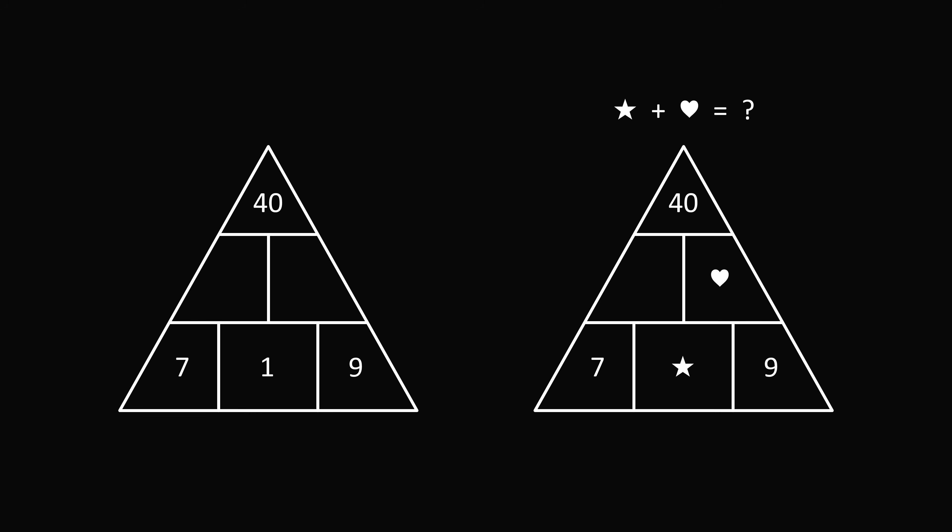We can now solve for the rest of the number pyramid. So 7 plus 1 is the number that has to be immediately above it, and 7 plus 1 is equal to 8. We then have 1 plus 9, which is equal to 10, so that has to be the number above it. Now in the middle row, we take 8 plus 10, and that's equal to 18. But 18 has to be equal to the number above it for this number pyramid, and 18 is not equal to 40. So we know that star cannot be equal to 1.